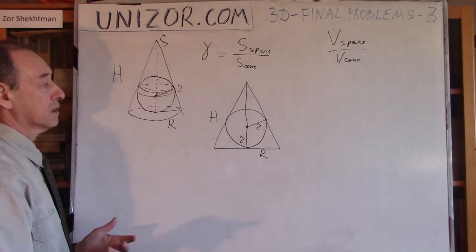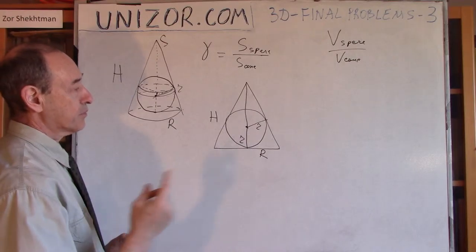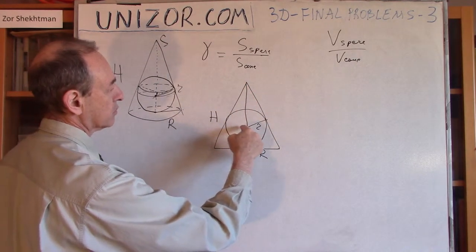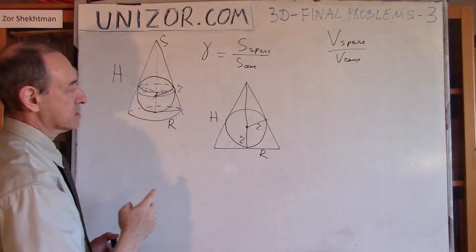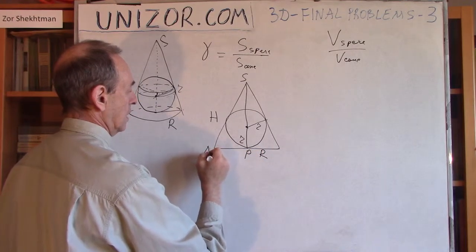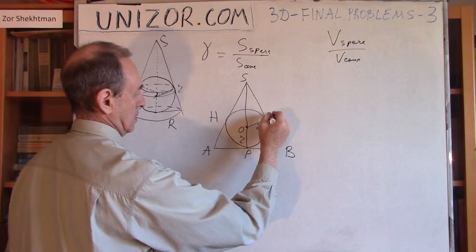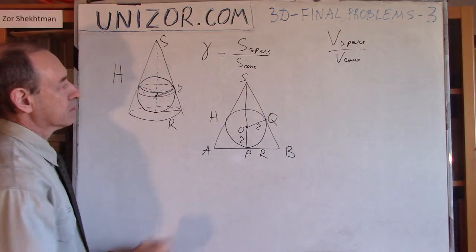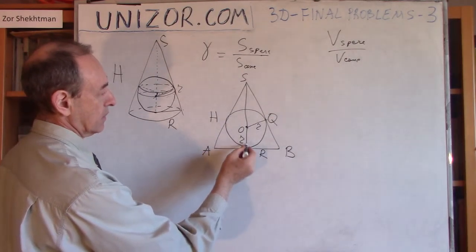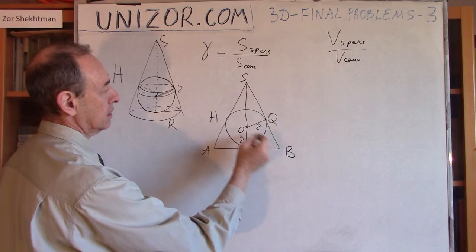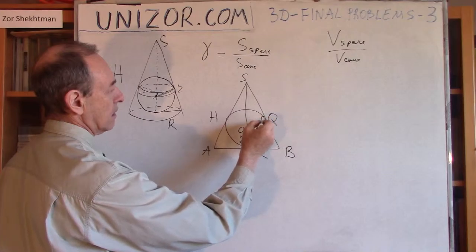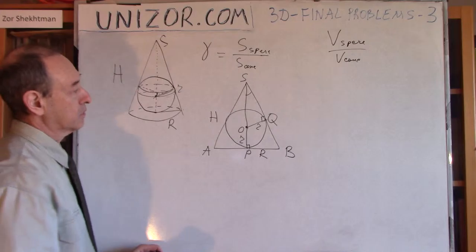We can find lowercase r differently. In the previous case, I was talking about comparing the area of a triangle with the area of three smaller triangles if you connect the center with vertices. Now let me offer another solution. Obviously, triangles SPB and SOQ are similar because both of them are right triangles. This is an altitude of an isosceles triangle, and this is a radius towards the point of tangency between the line and the circle. These angles are right, and they have a common angle which they share.